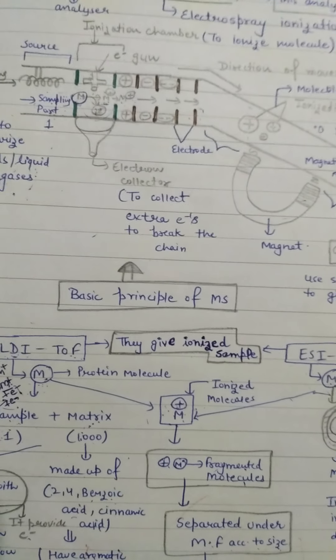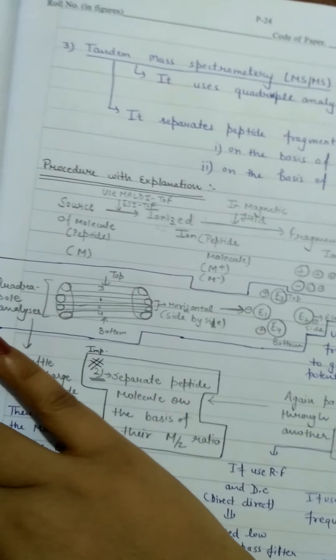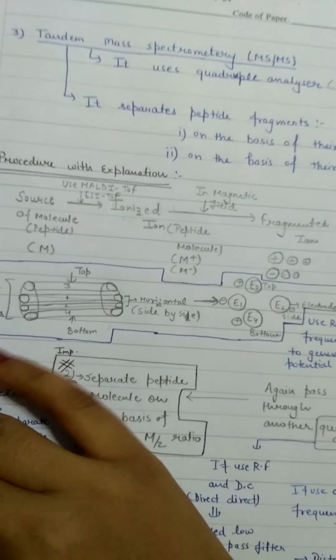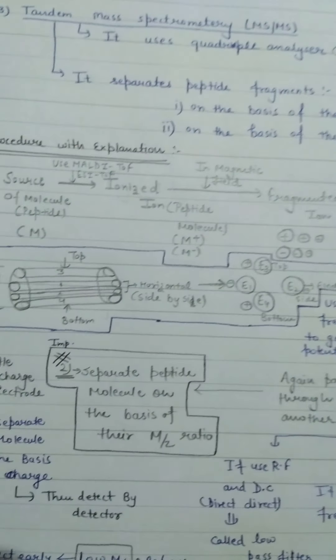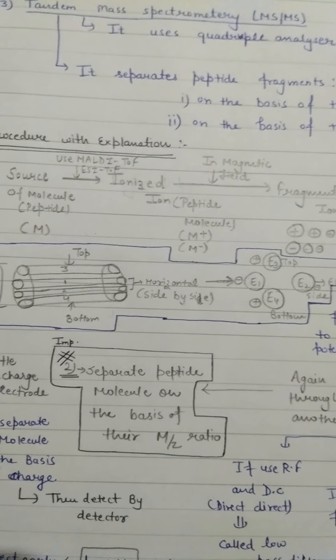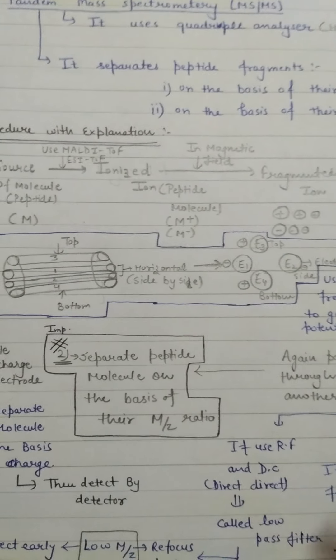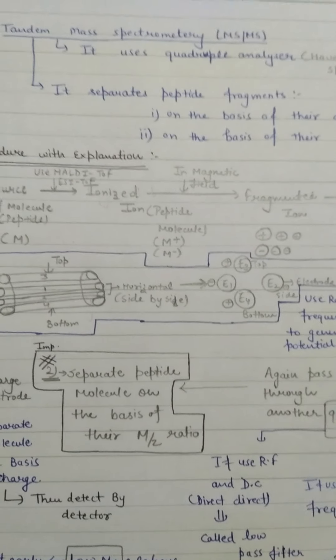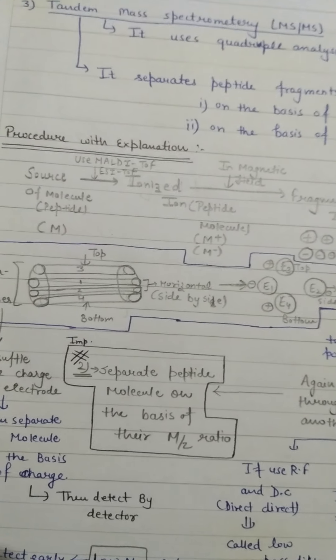I hope you will understand these three techniques. Later, we will learn what we need. I think we will learn about Tandem Mass Spectrometry — that is MS-MS — which is an advanced version of mass spectrometry. I will not cover it in full detail because it uses a very special type of analyzer. We are studying proteomics, so I will briefly discuss what Tandem Mass Spectrometry is.